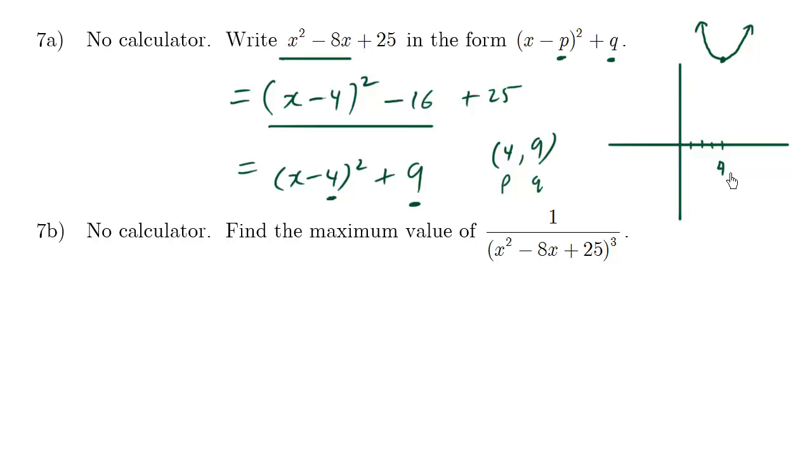At x equals 4, over here, you can see that this inside part, the function, happens to be this high, which is a value of 9. Now when we have 1 over 9 cubed, or 1 over 9, it's going to be a pretty small number.